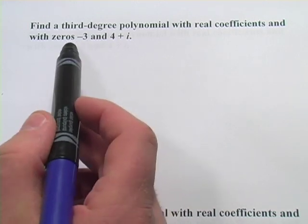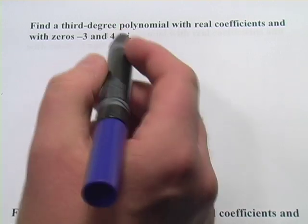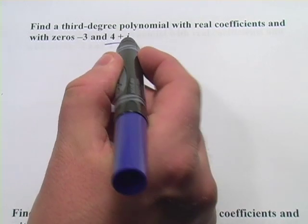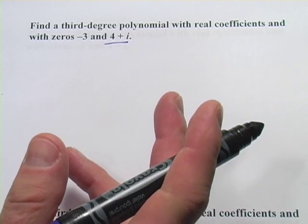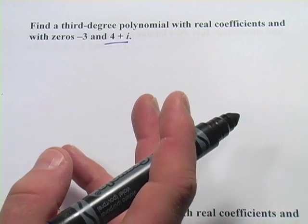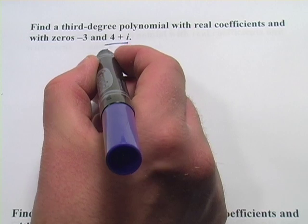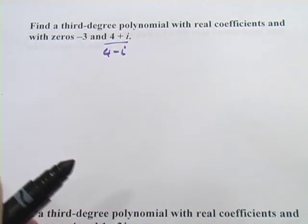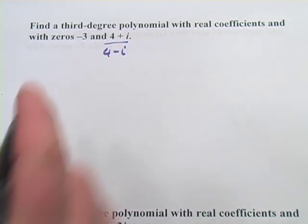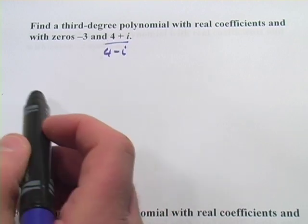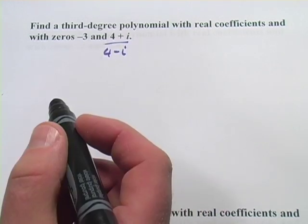We're given negative 3 and 4 plus i. The first trick to know is that when you have complex roots, they always come in pairs, and the pairs are conjugates. So if 4 plus i is a root, then so is 4 minus i, which is helpful because we only had two zeros here and we need 3 to make a third-degree polynomial.